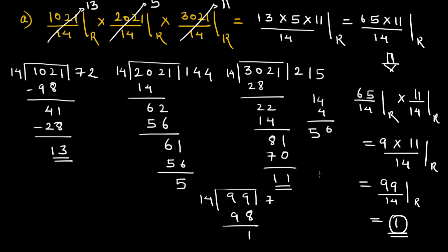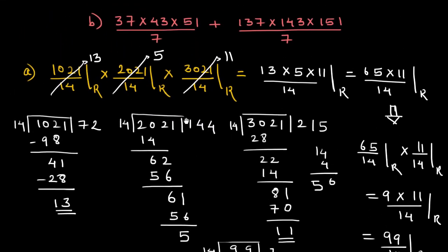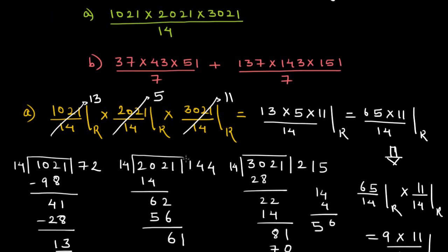This process will become much easier once I introduce the concept of negative remainders, which I'll do in the next video. But using the basic remainder theorem, though it looks like a cumbersome process, we've got the concept of how to find the remainder for individual numbers. Now let's do the second problem, where we find individual remainders for each part and then add them up.